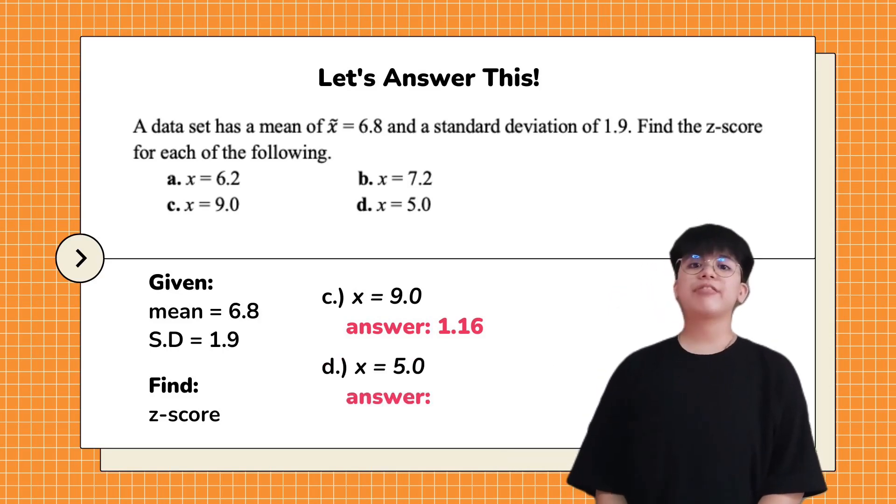Next is letter D, having the value of X, which is 5. Again, I will give you 15 seconds to practice yourself in solving and finding the z-scores of the given questions.